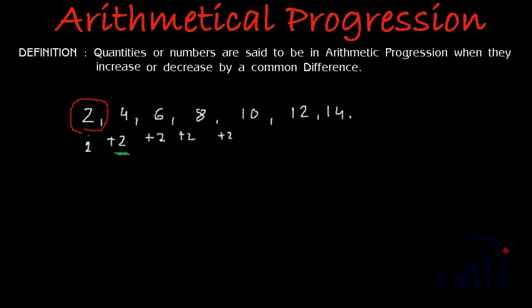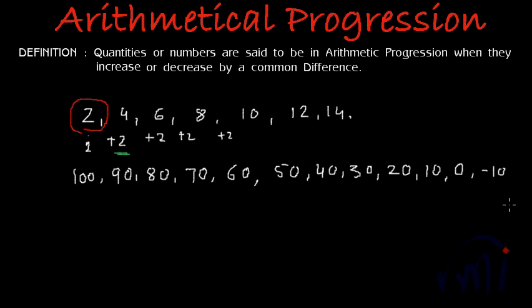Or if I write a series like 100, 90, 80, 70, 60, 50, 40, 30, 20, 10. Then the next term will be 0 and after that we will have minus 10 minus 20 and this can go on.